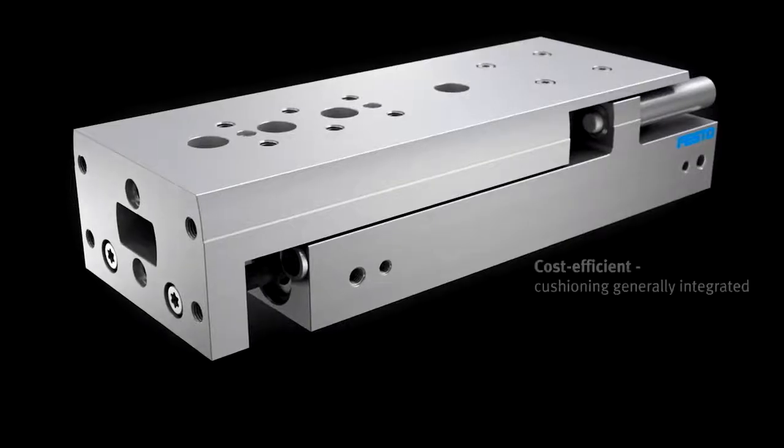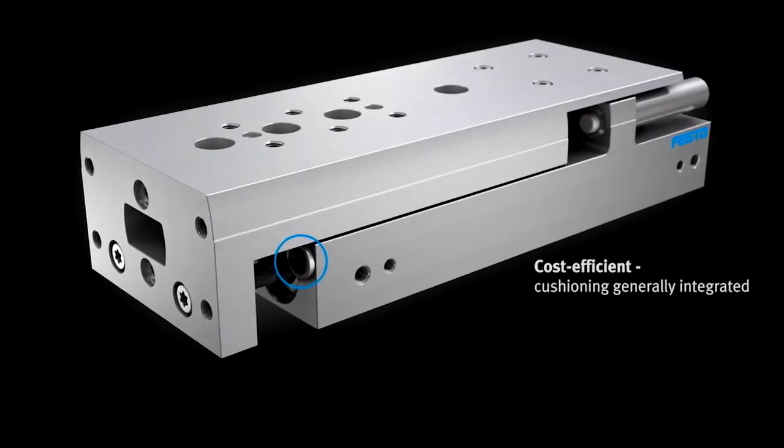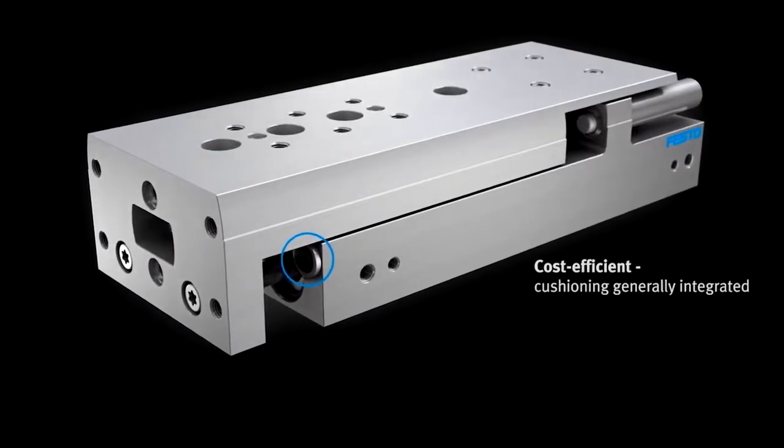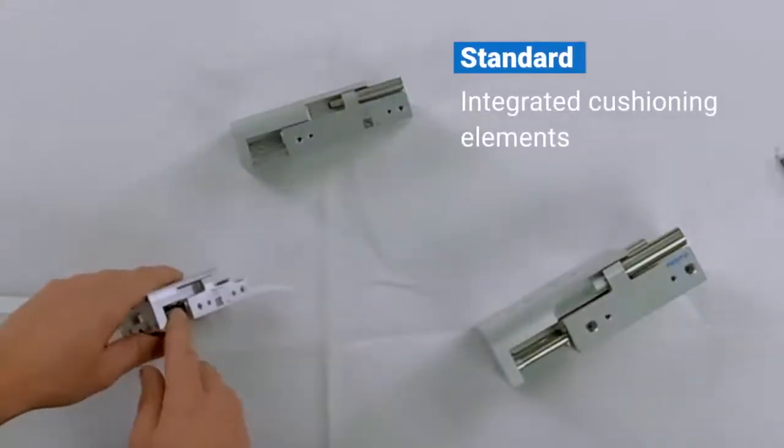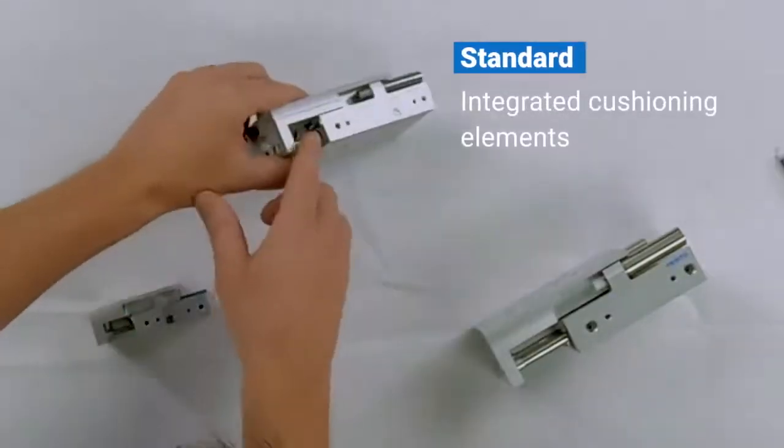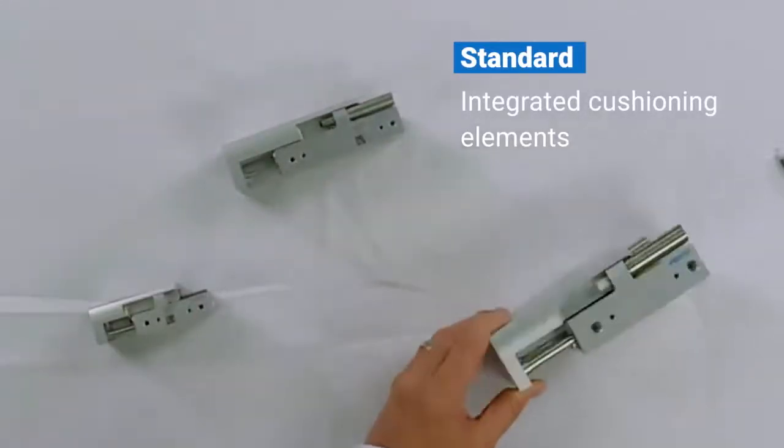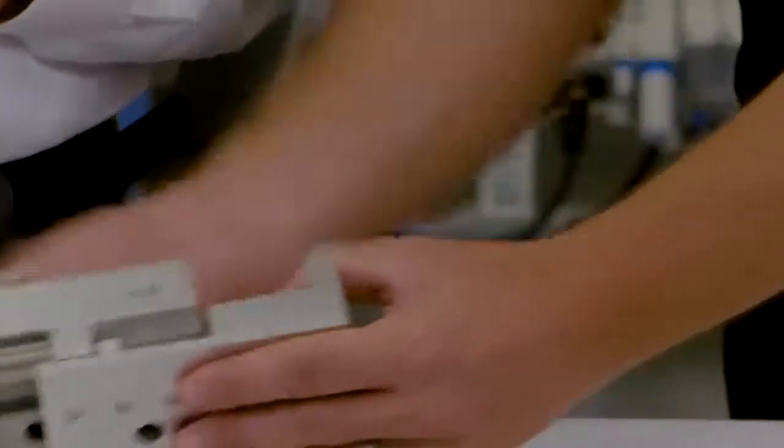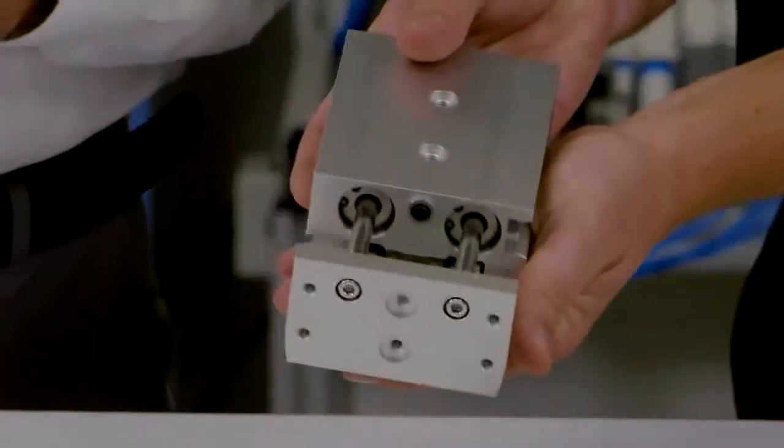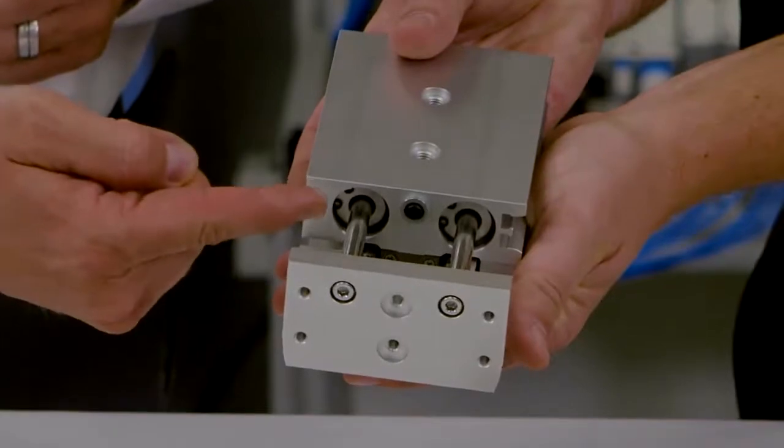The DGST is the first slide offering from Festo which can be operated without additional cushioning elements. This is possible due to standard integrated cushioning elements that easily and reliably absorb low levels of energy. If stroke adjustment and precision positioning are not required, customers can save money and time with the standard variant.